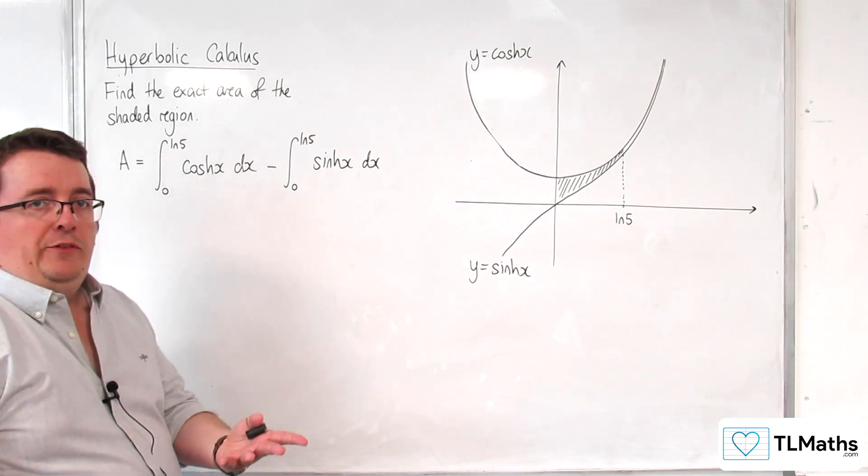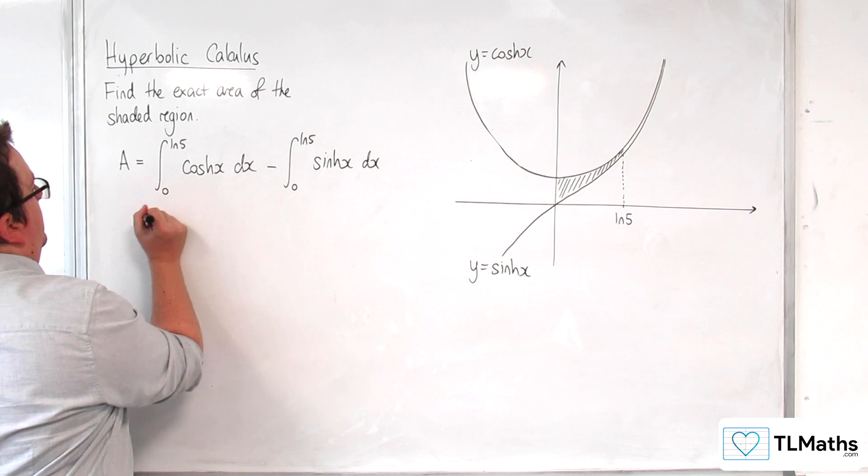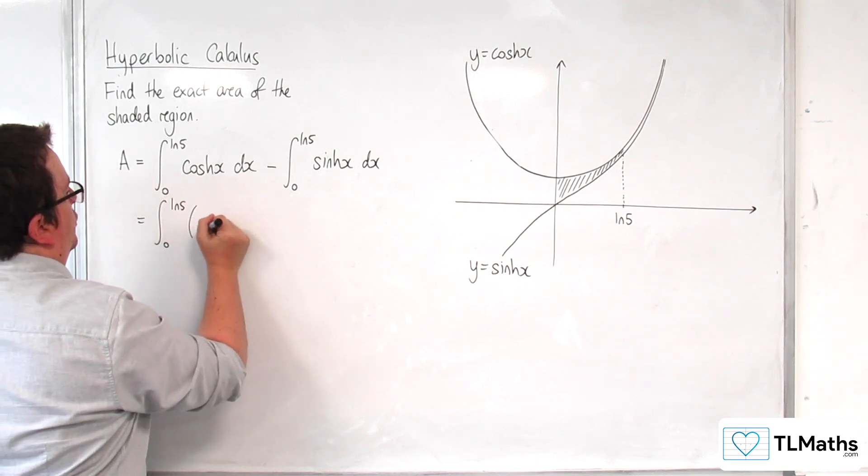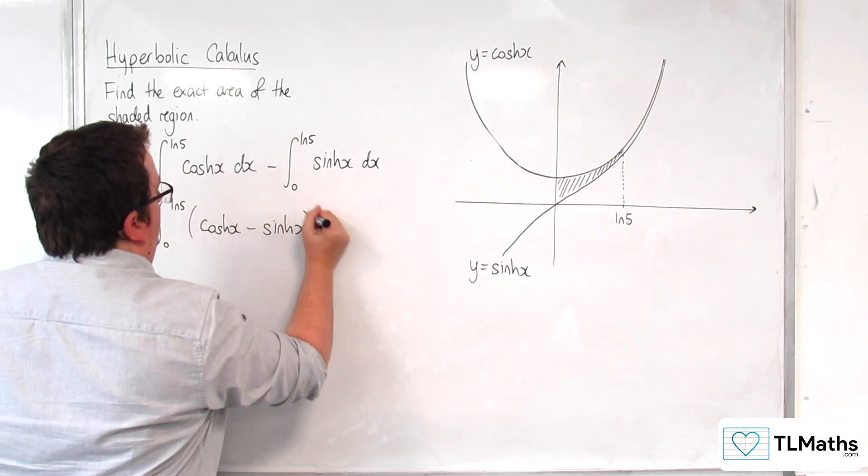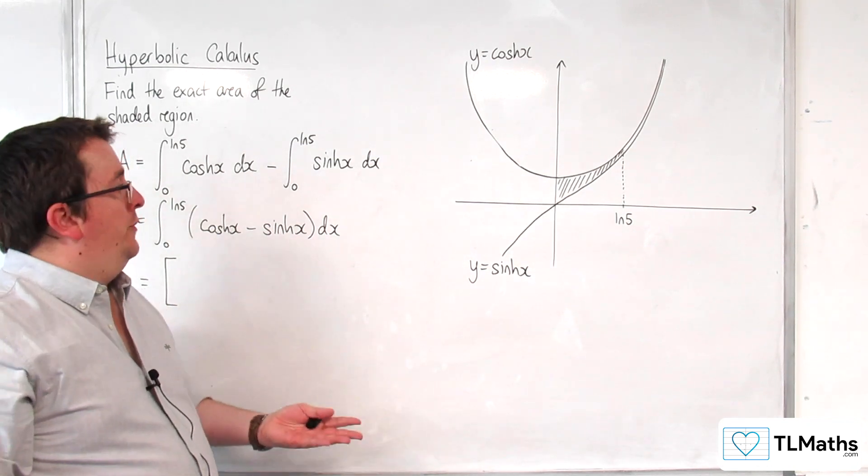Now because the limits of your integral are the same, you can just bring those together. So this is the integral between 0 and log 5 of cosh x take away sinh x. And that makes the calculation easier for us.